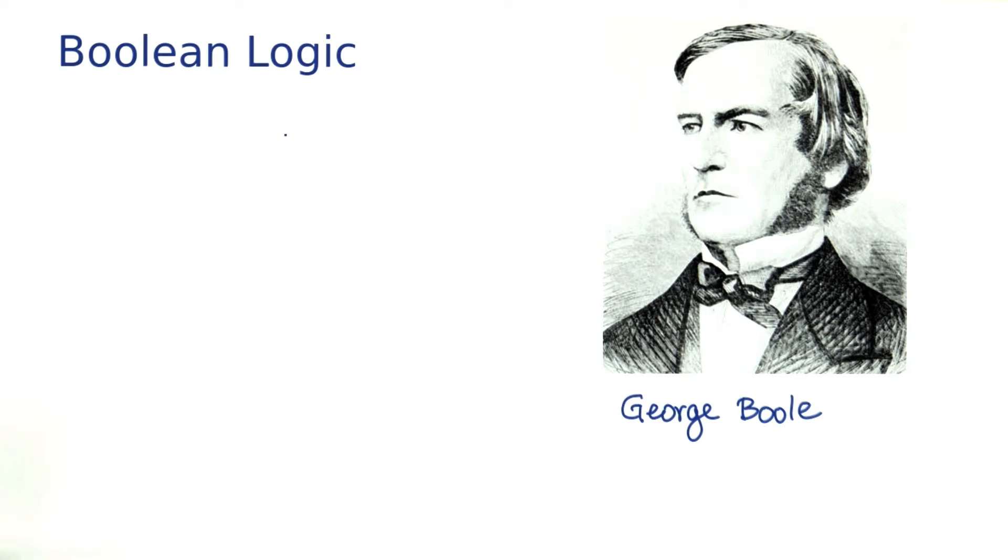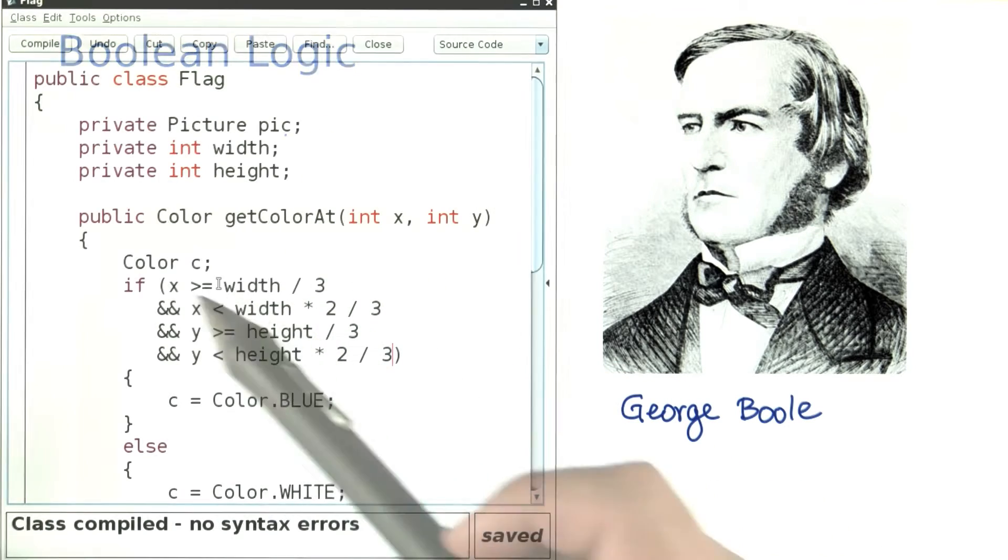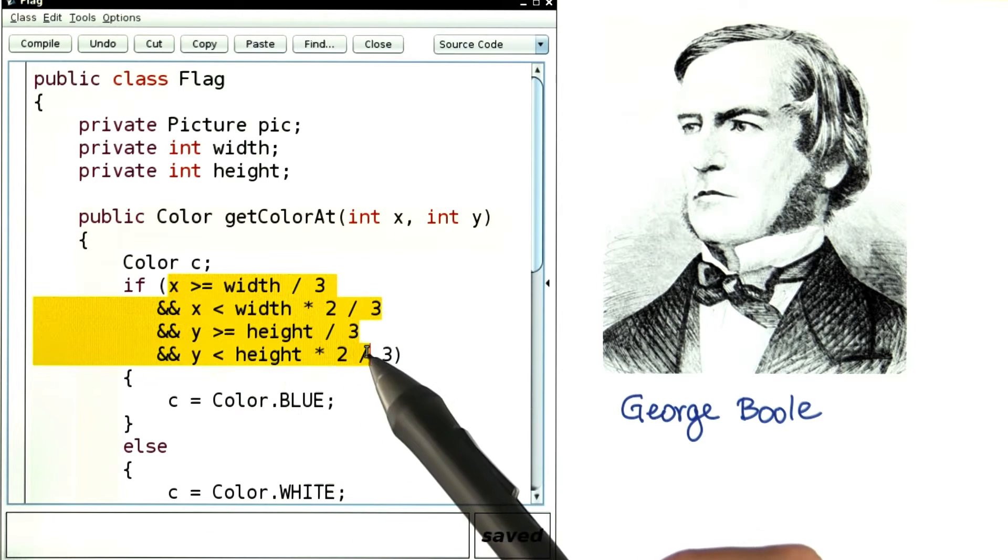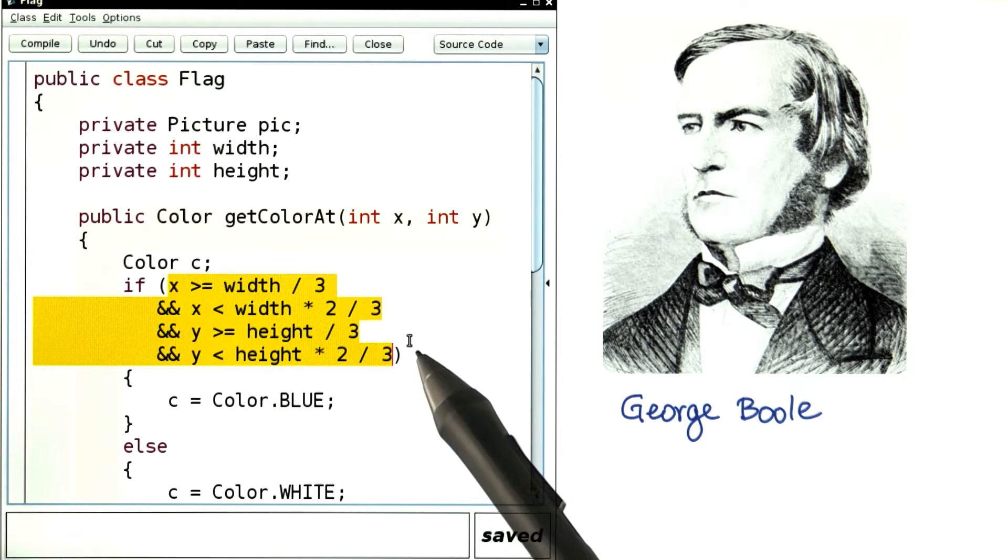Now, why do we care? We want our programs to be simpler to read. And so when we have a long and complex condition such as this one, we might want to put it in a separate method.